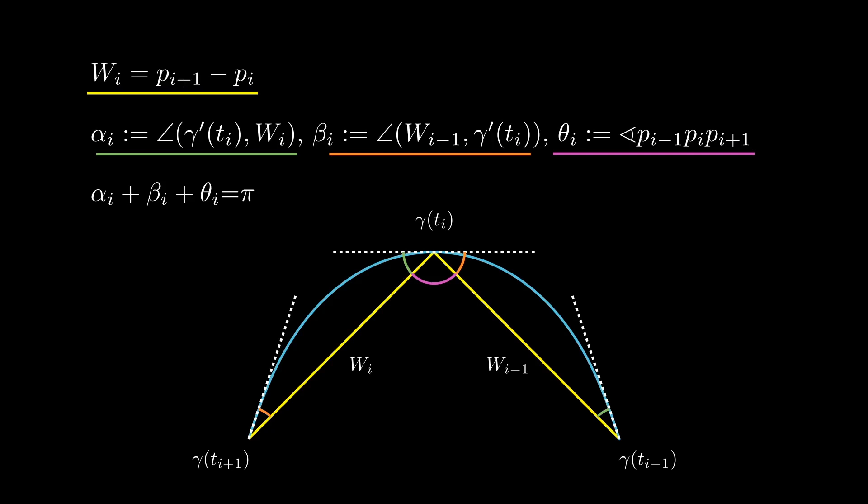By looking at the drawing, it may be tempting to claim that this is obvious, but in the case the region surrounded by gamma lies on its right, the equation is false and the relationship between α, β and θ is slightly different.